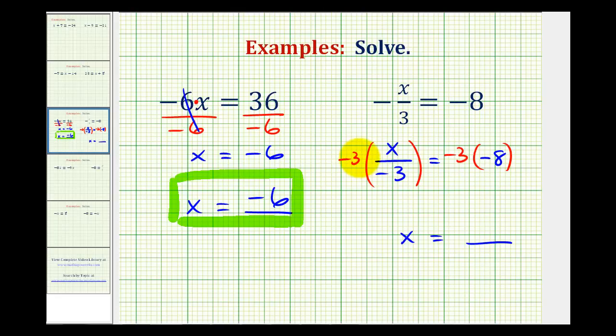So multiplying by negative 3 and then dividing by negative 3 would simplify to 1. So we're left with x on the left side, and on the right side we have negative 3 times negative 8. Well, negative times a negative would be positive, so x equals positive 24. So x equals 24 is our solution.